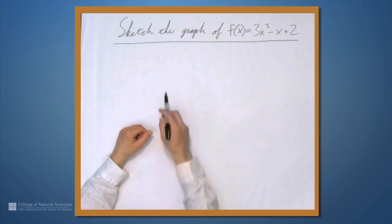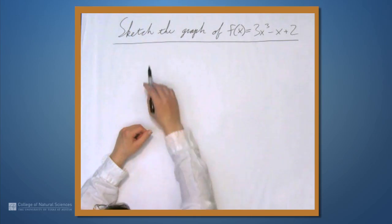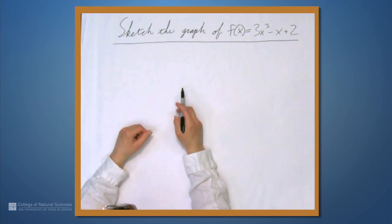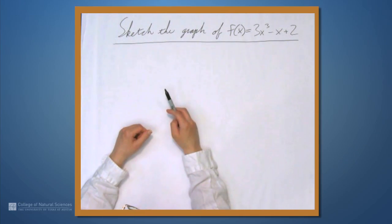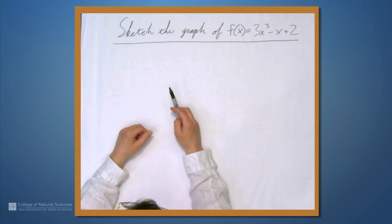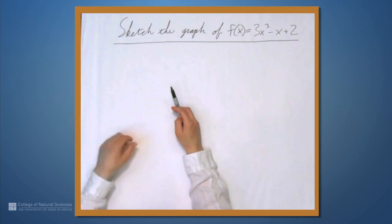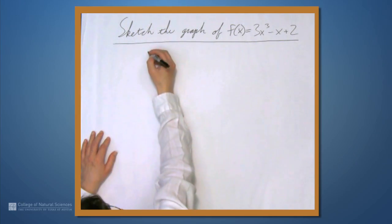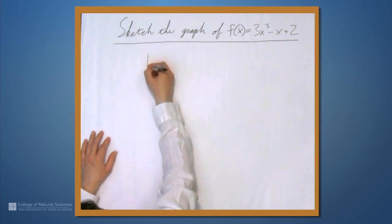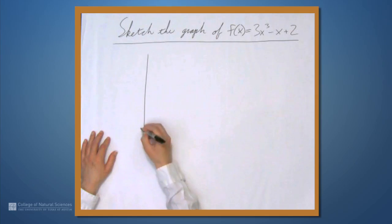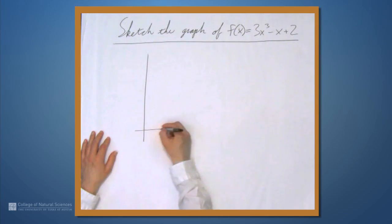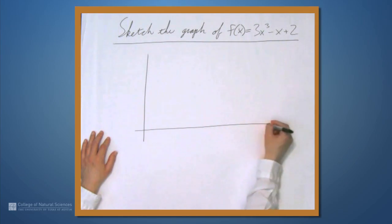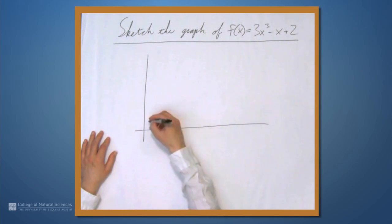So we're here at the example table and in this video we're going to sketch the graph of the function f equals 3x cubed minus x plus 2. Let's talk for a little bit about how we use calculus to sketch a graph.